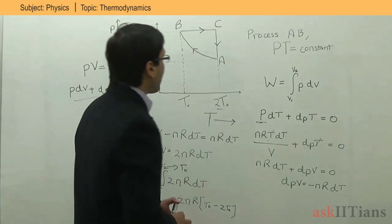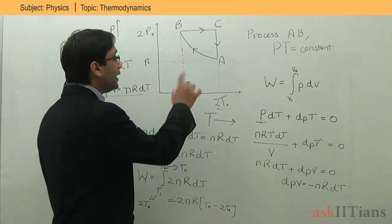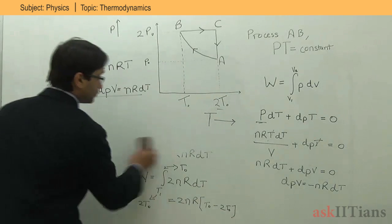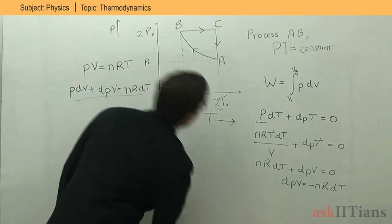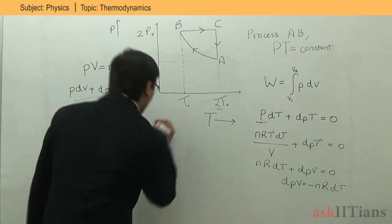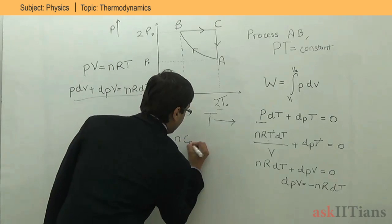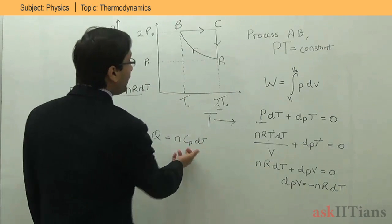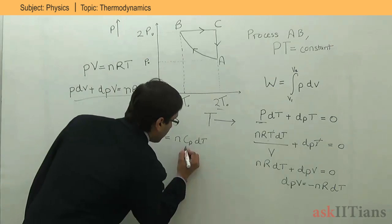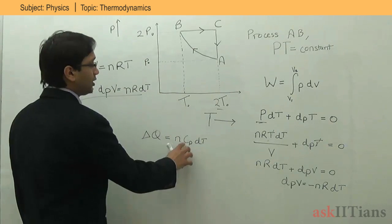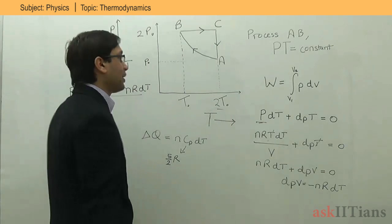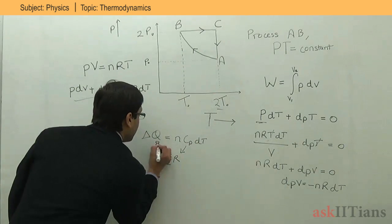In the second part we find the heat absorbed or released in each individual process: BC, CA, and AB. For process B to C, it is an isobaric process. The heat exchange is Q = nCpΔT. For a monoatomic gas, Cp = 5/2 R. The temperature change from B to C is from T₀ to 2T₀, so ΔT = T₀. Thus Q_BC = n(5/2 R)(T₀).